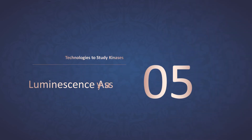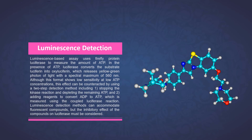Part 5: Luminescence detection. Luminescence-based assay uses firefly protein luciferase to measure the amount of ATP. In the presence of ATP, luciferase converts the substrate luciferin into oxyluciferin, which releases yellow-green photons of light with a spectral maximum of 560 nm. Although this format shows low sensitivity at low ATP concentrations, this effect can be counteracted by using a two-step detection method including stopping the kinase reaction, depleting the remaining ATP, and adding reagents to convert ADP to ATP, which is measured using the coupled luciferase reaction. Luminescence detection methods can accommodate fluorescent compounds, but the inhibitory effect of the compounds on luciferase must be considered.